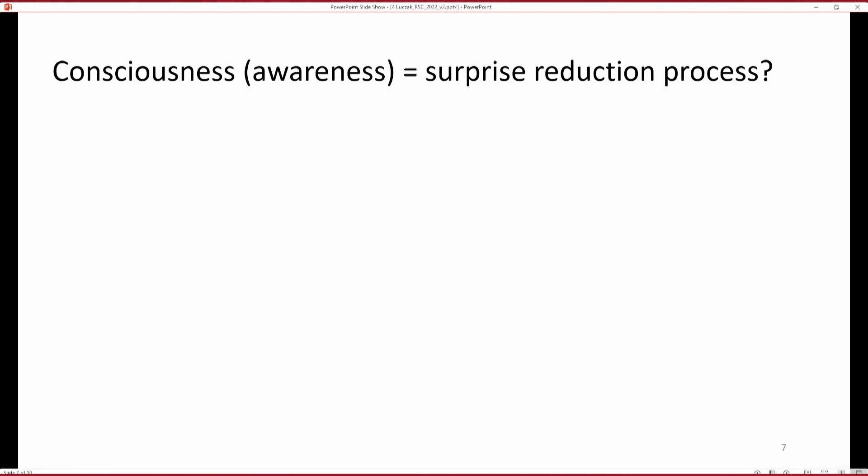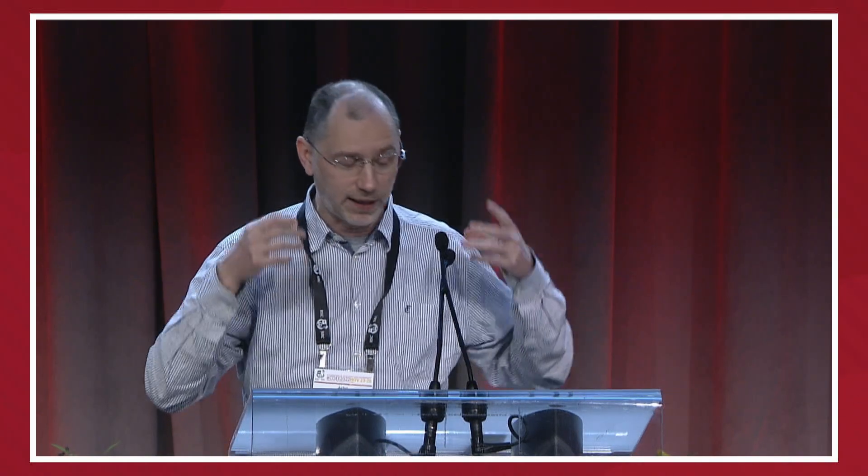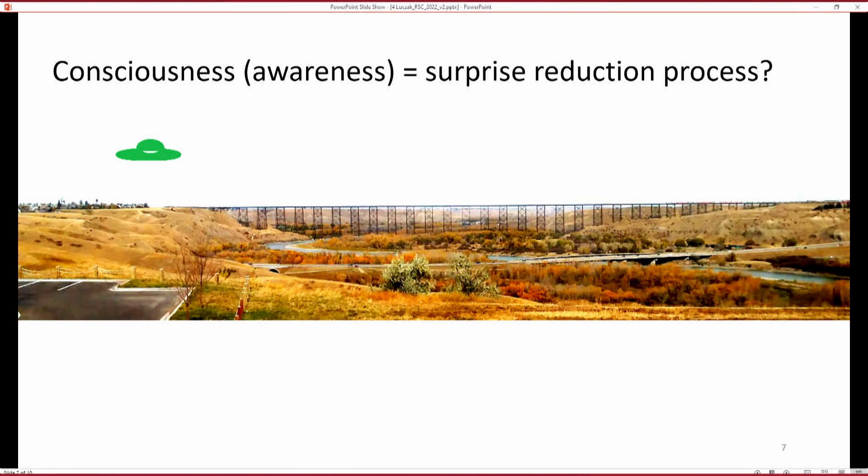So let's go to consciousness. And here I define consciousness in very narrow way as our awareness. So if you are aware of some stimuli, it means that you are conscious of that stimuli. And there is a lot of suggestions that consciousness is related to surprise. So for example, here is a picture from my office building and there is a lot of details, but if there is some green UFO appearing, so it is something what you wouldn't predict, all your conscious will be focused on this green UFO that this is the most surprising and you will be the most conscious of this particular thing. And there is a lot of electrophysiological evidences that indeed consciousness is tightly linked to surprise.